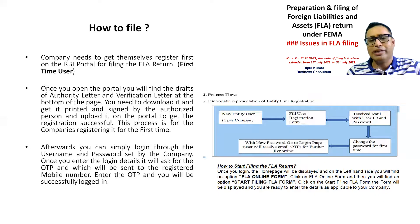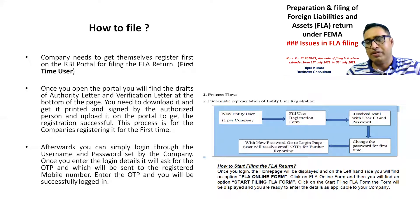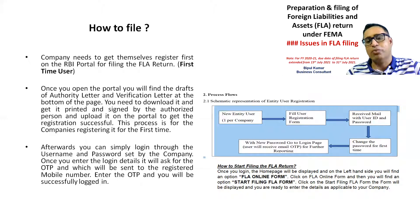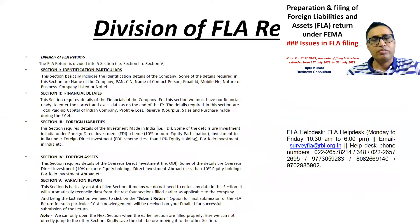After you log in, the home page is displayed. On the left-hand side, you will have the option of FLA online form. Click on FLA online form, and then you will find an option to start filing the FLA form. Click on start filing FLA form. The form will be displayed and you will be ready to enter the details as applicable to the company.